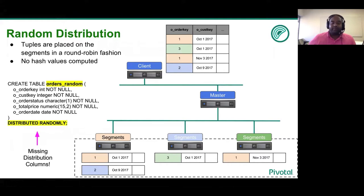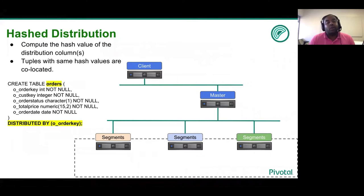In contrast, let's now look at the hash distribution. A customer can specify a table to be distributed by a hash value by the following SQL command. All the customer has to do is to add the distributed by a set of columns at the end of the create table. In this example, you distribute the orders based on order key.